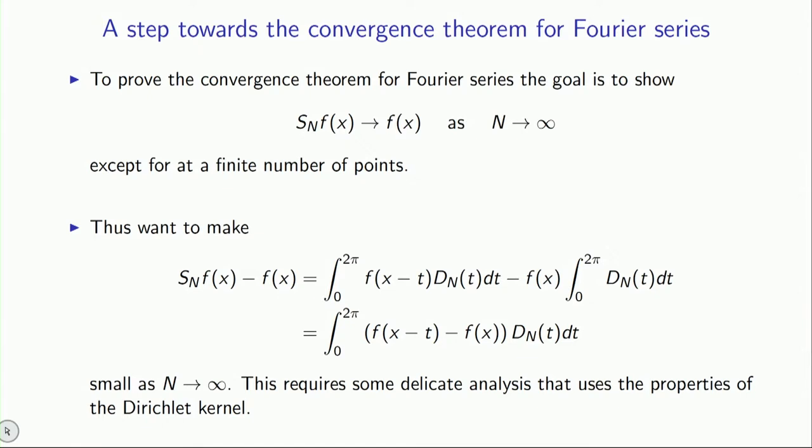you want to show that the difference between the partial sum and the function is going to be small, in fact, goes to 0 as n goes to infinity. Now, one thing you can do is that, well, the partial sum you can write as a convolution, as we have done here in the first term in the sum, minus f of x. But remember,